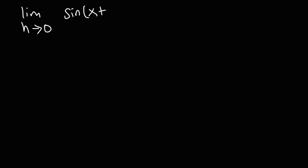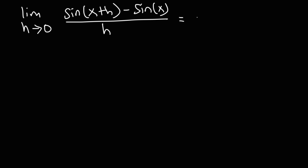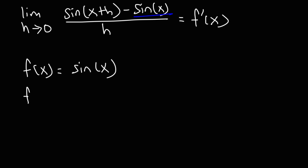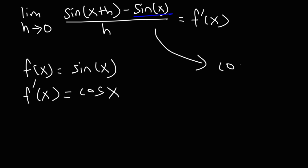Let's try another one. Let's say we have the limit as h approaches 0 of sin(x+h) minus sin(x) divided by h. Once again, what we need to do is determine f(x), because this entire expression is equal to f prime of x. f(x) in this problem is going to equal sin(x). So all we need to do is find the derivative of sin(x). Hopefully you remember the derivatives of trigonometric functions — the derivative of sine is cosine. So this entire expression is equal to cosine of x.